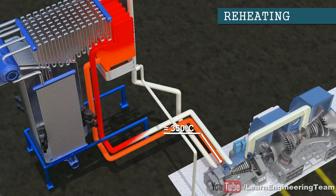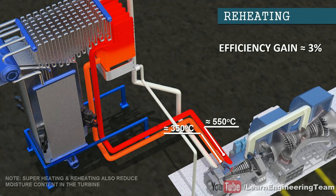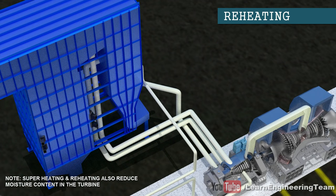A heat exchanger known as a reheater is used for this purpose. Reheating and superheating also increase the power plant capacity along with the efficiency.